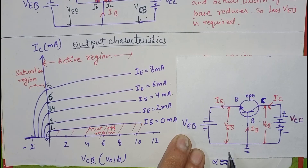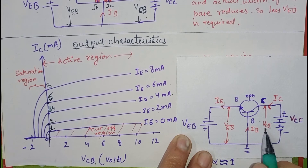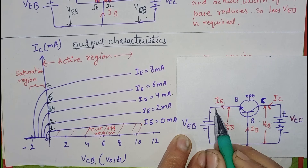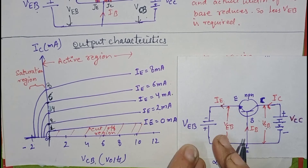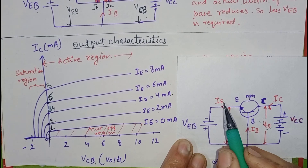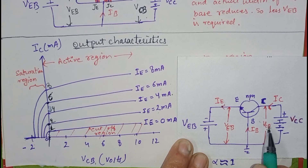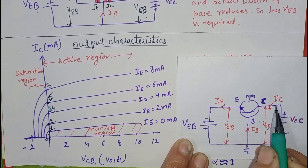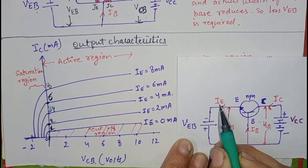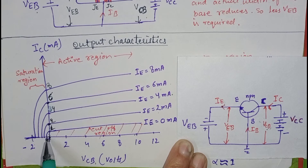Now we will draw the output characteristics of common base configuration. Output characteristics establish a relationship between output voltage and output current at a fixed value of IE. First of all, to draw the characteristics, we fix the value of IE equals to 0. Then we will change the value of VCB and note the value of current. At this fixed current we will take 3 or 4 readings, draw the graph, and we will get this graph at IE equals to 0.